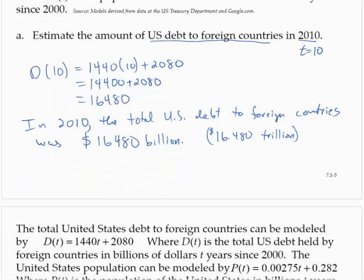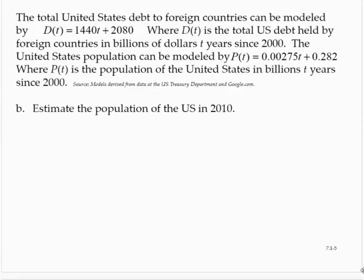Part B: Estimate the population of the United States in 2010. The population function, again T equals 10, so P of 10 would give us 0.00275 times 10 plus 2.82.